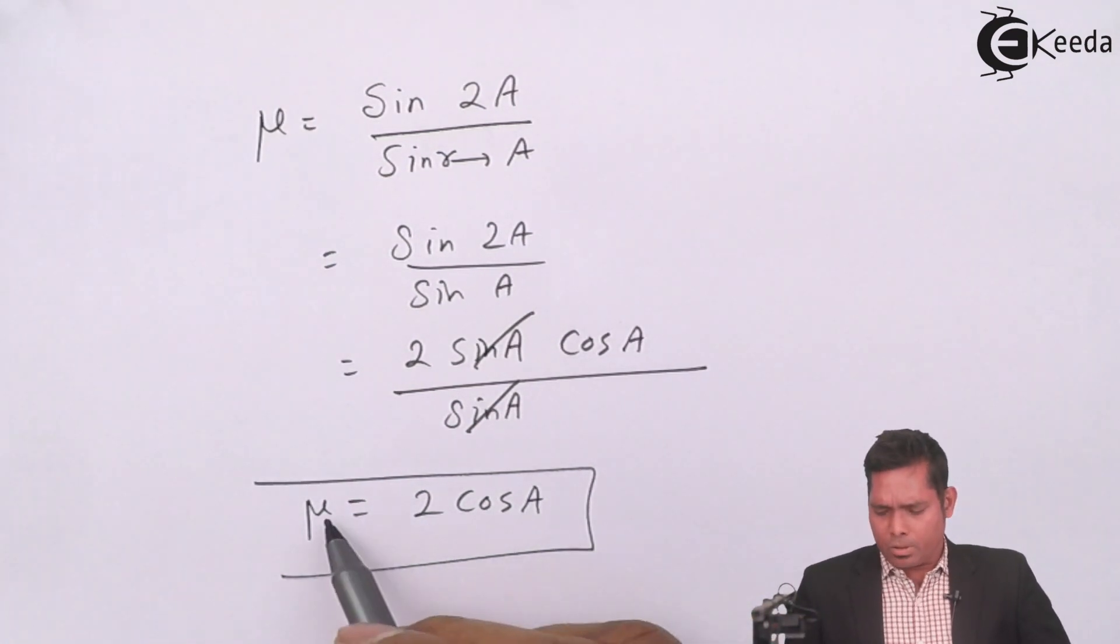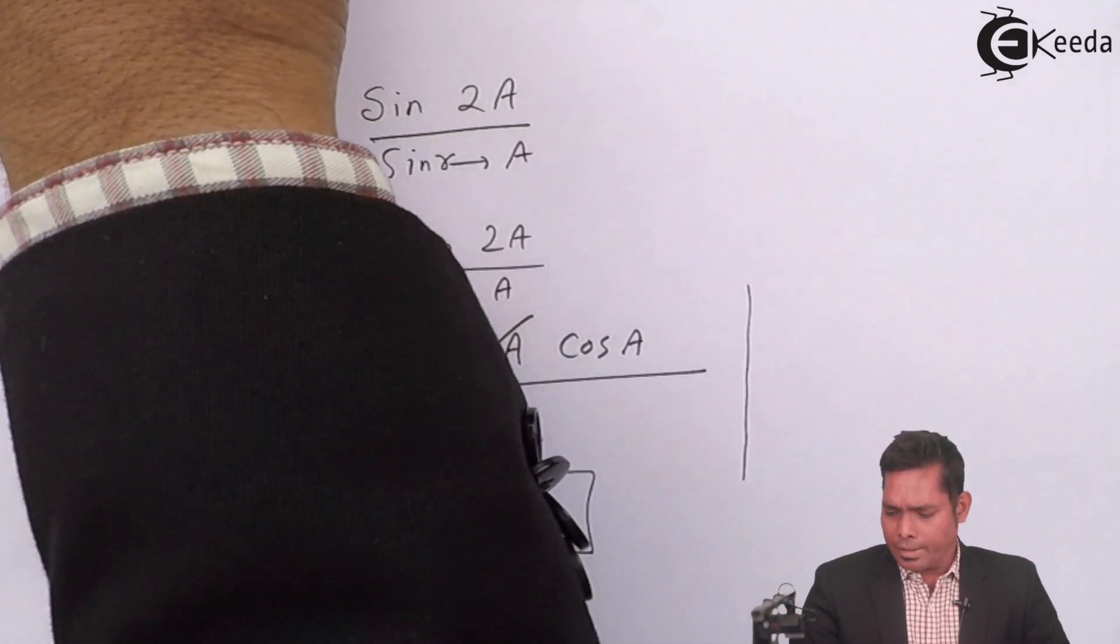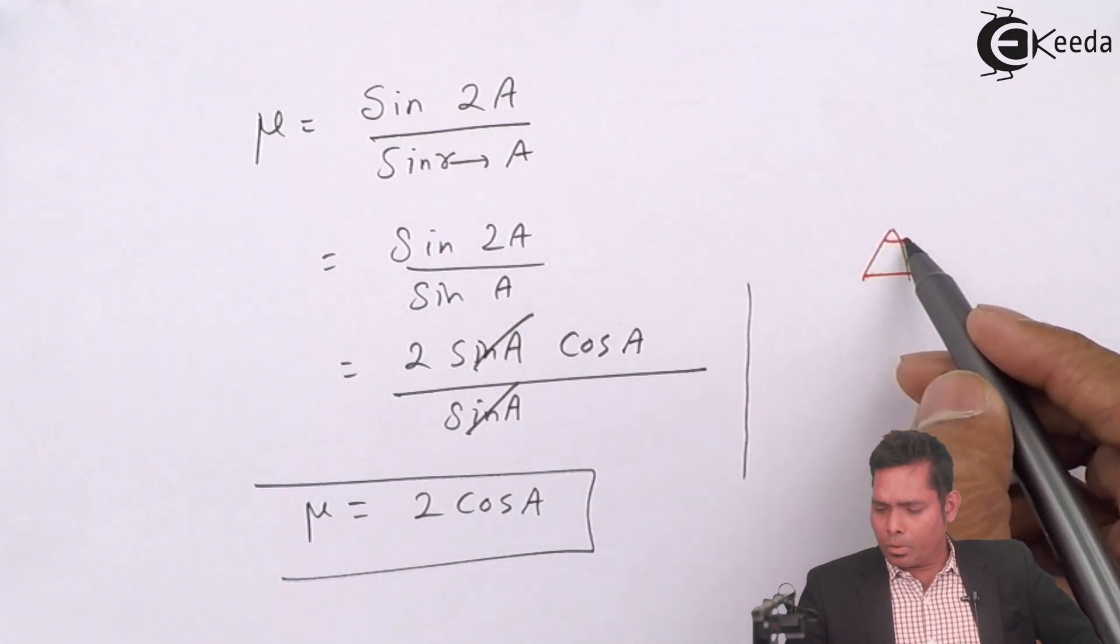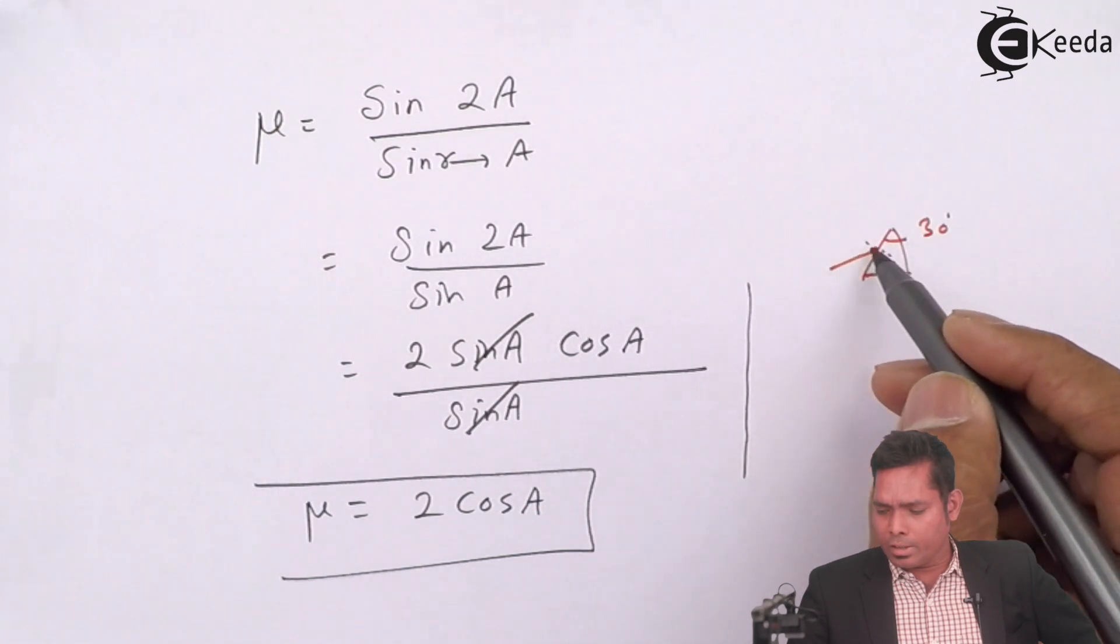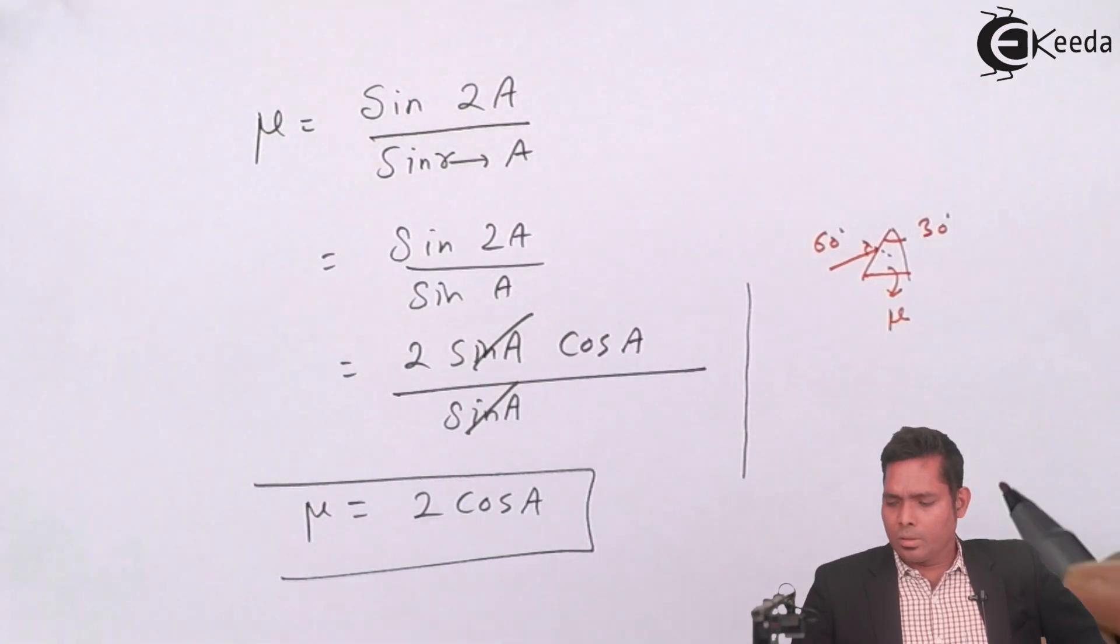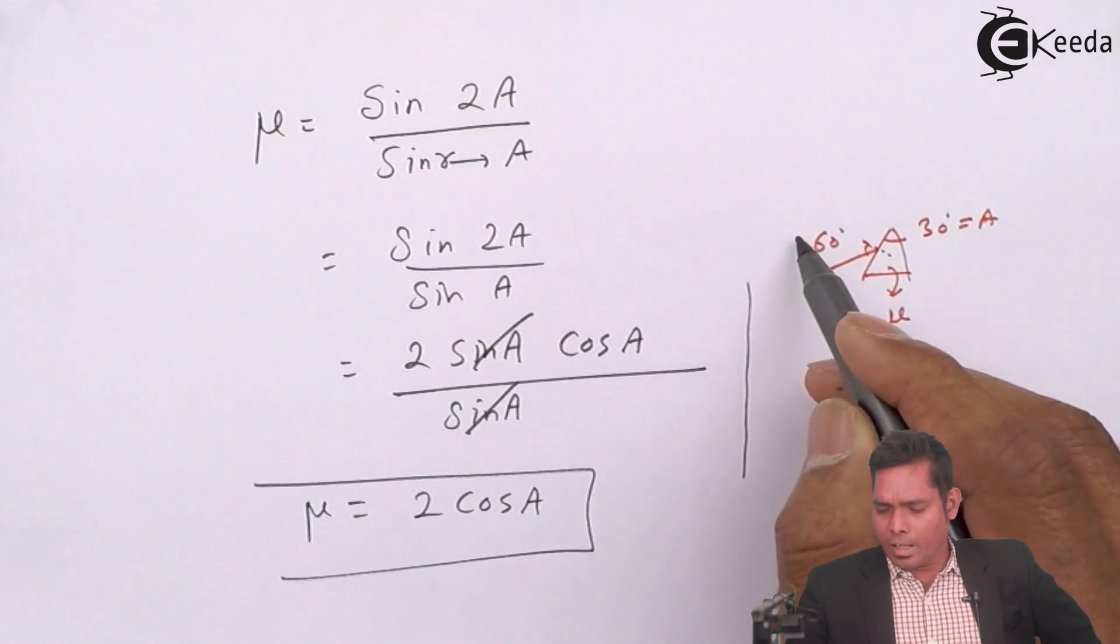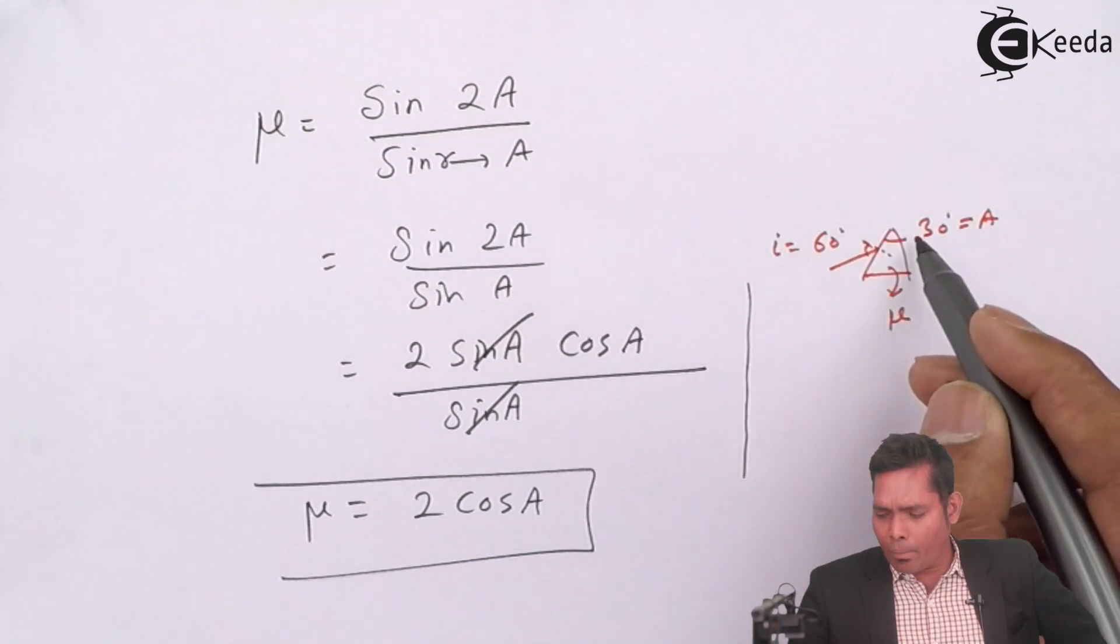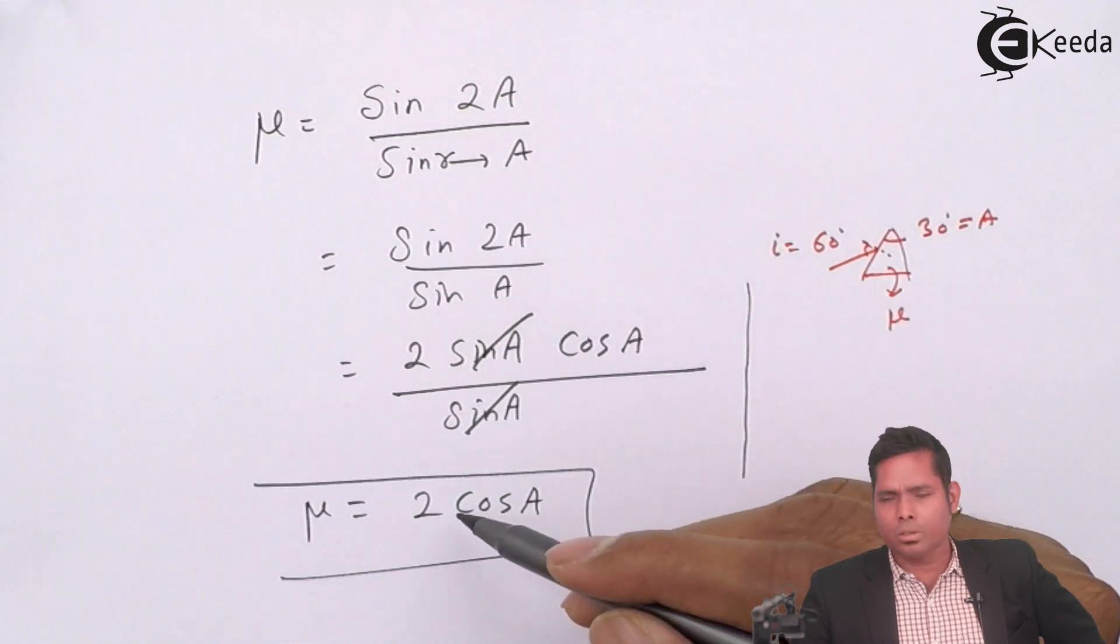So the refractive index of the material of the prism is 2 cos A. For example, if I say that the angle of the prism is suppose 30 degrees and angle of incidence is 60 degrees, then what is the refractive index of the prism? What is given here is A. What is given here is I. So if angle of incidence is double the angle of the prism, in that case, the refractive index can be found directly with the help of this formula.